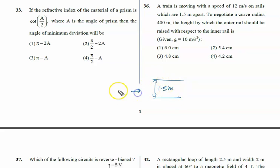The speed of the train is given to us as 12 meters per second. To negotiate a curve of radius 400 meters, the height by which the outer rail should be raised—this is the situation we need to solve.